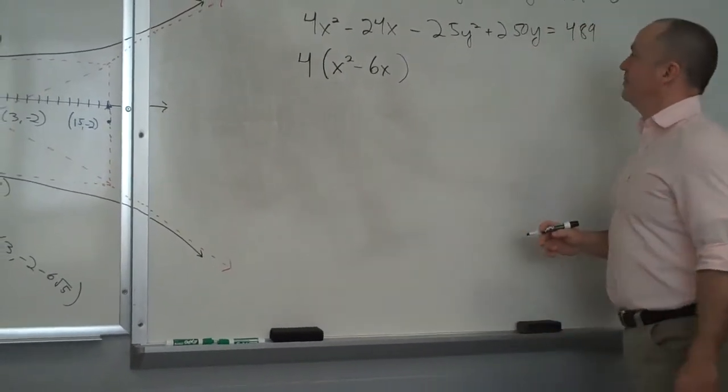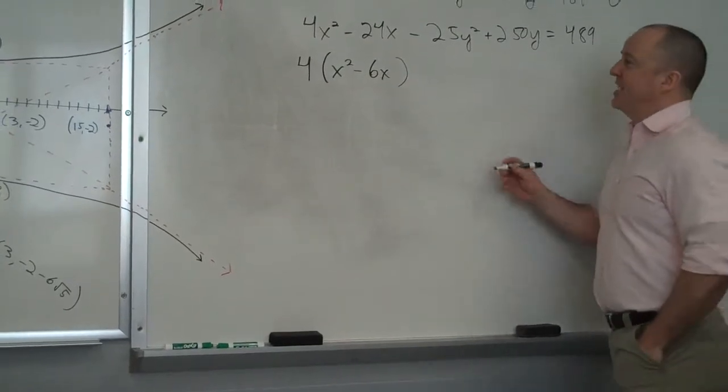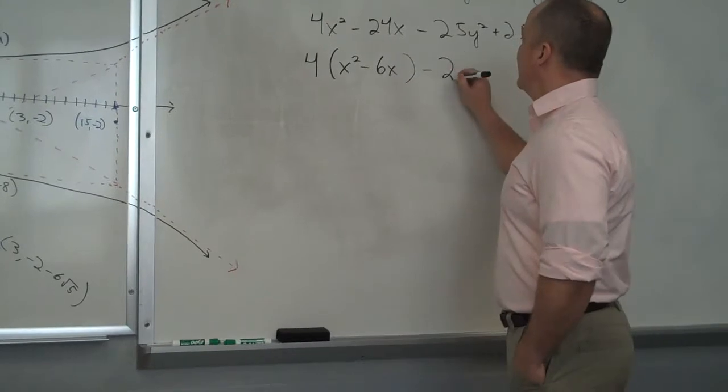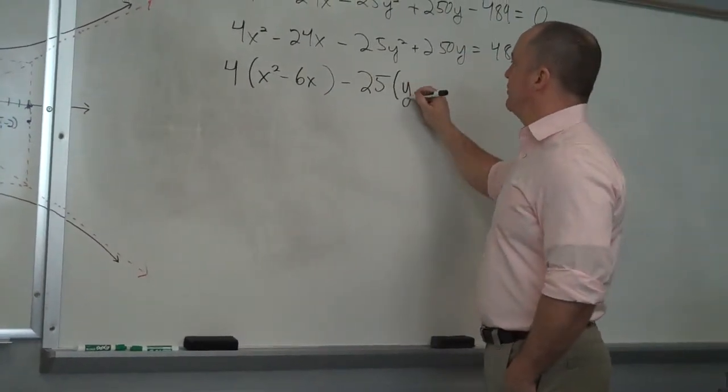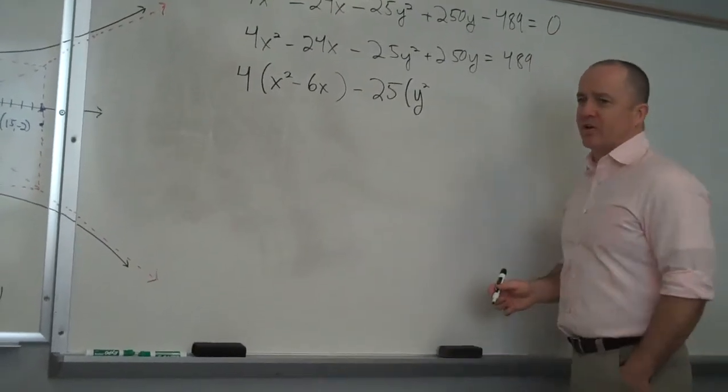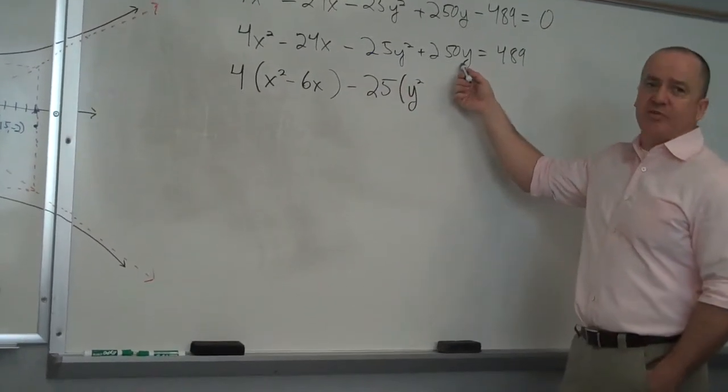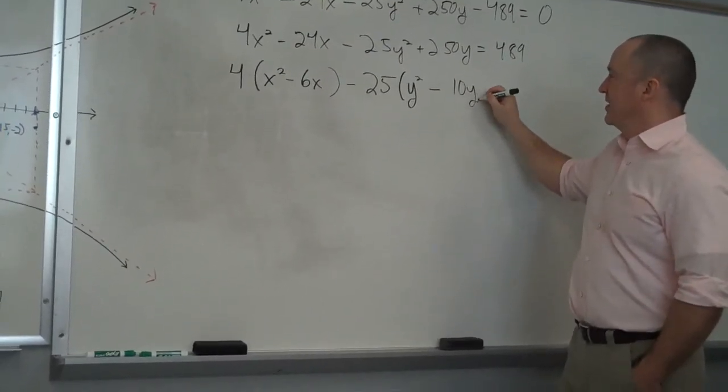What do I take out of... 25. I take out positive or negative? Negative. I have to take out... Here's a big mistake I see a lot. I take out negative 25, because I need this to be positive 1y squared for completing the square to work. Now, when I factor negative 25 out of positive 250... I have minus 10y.